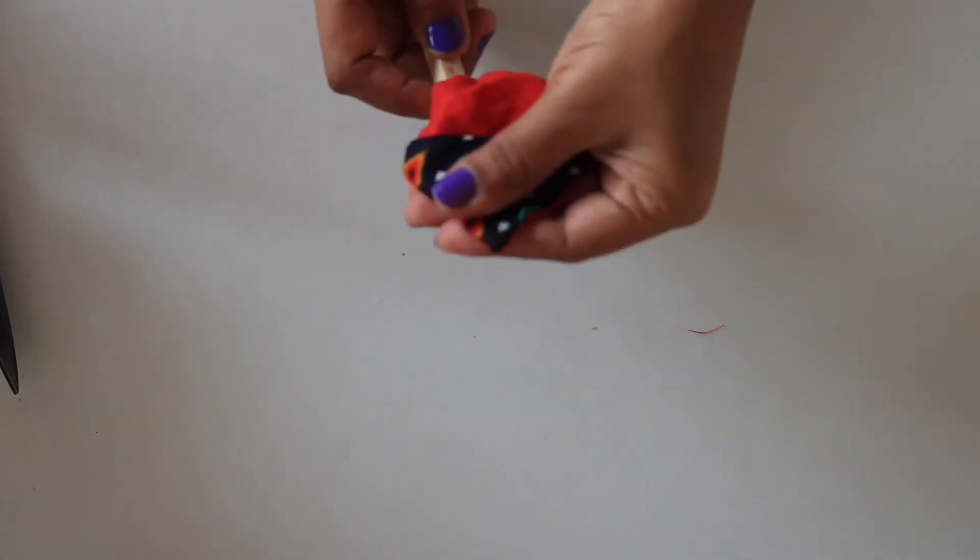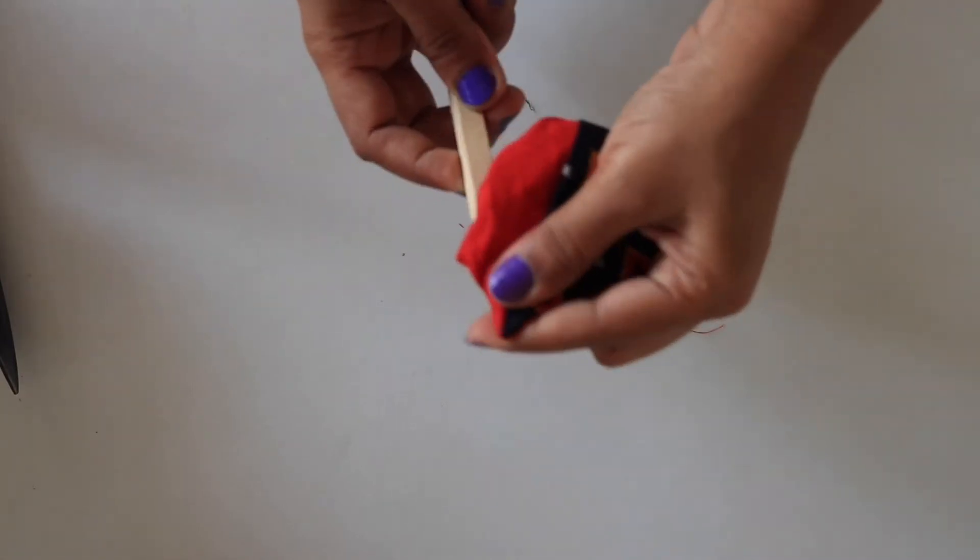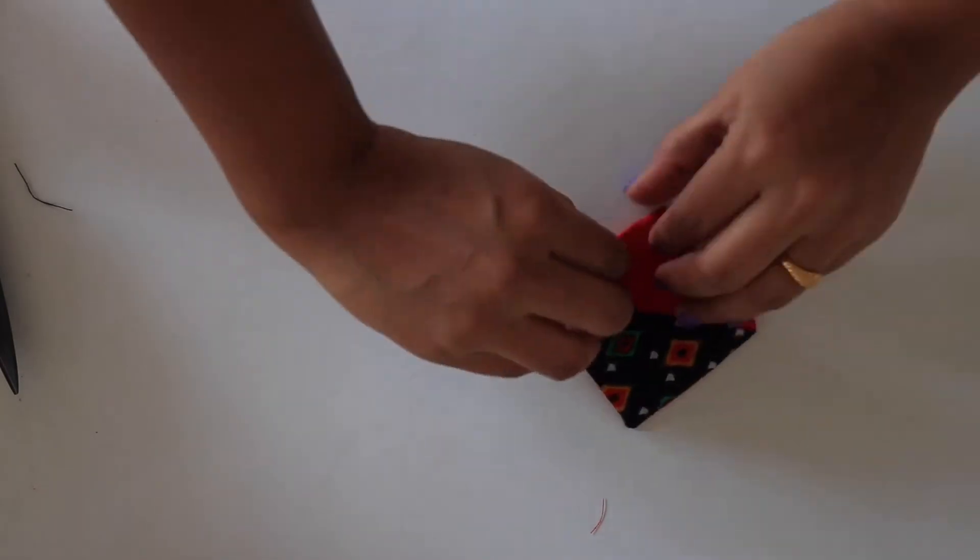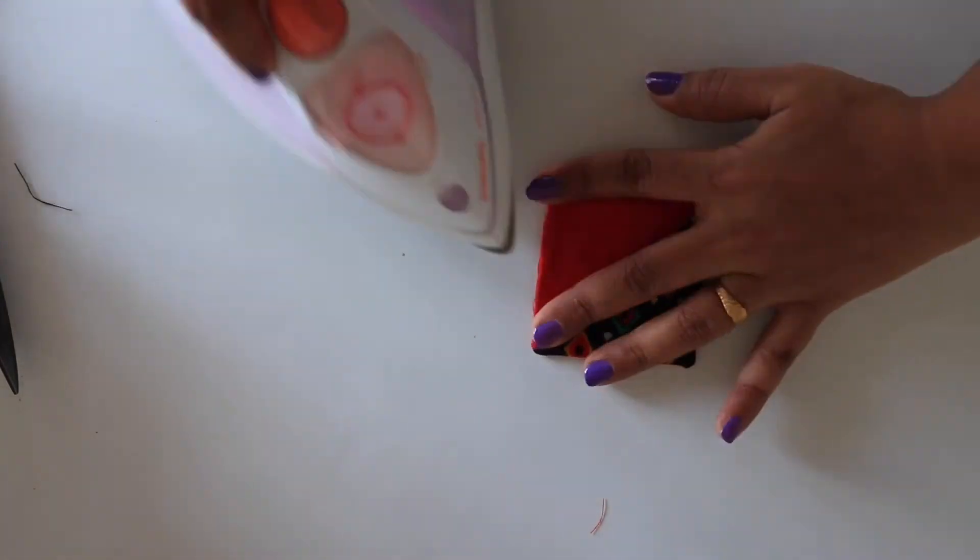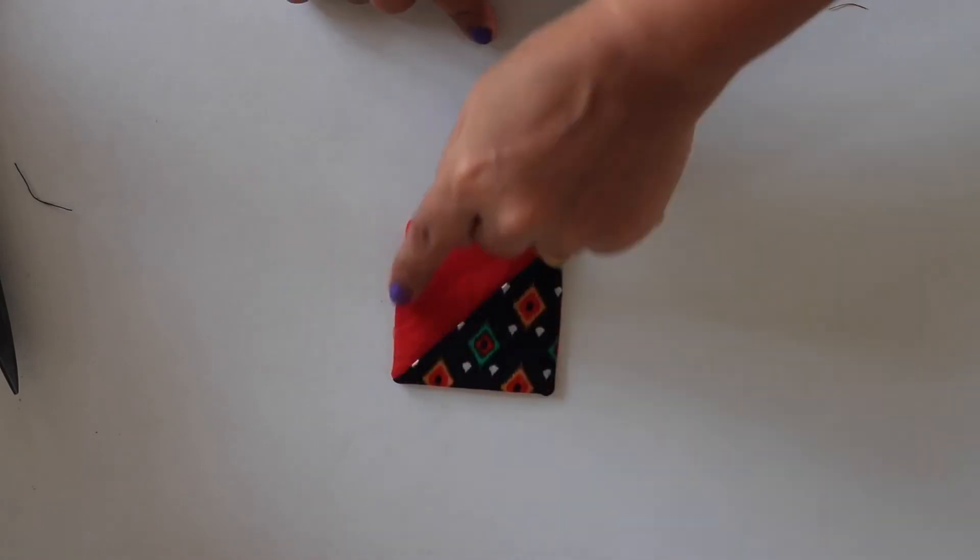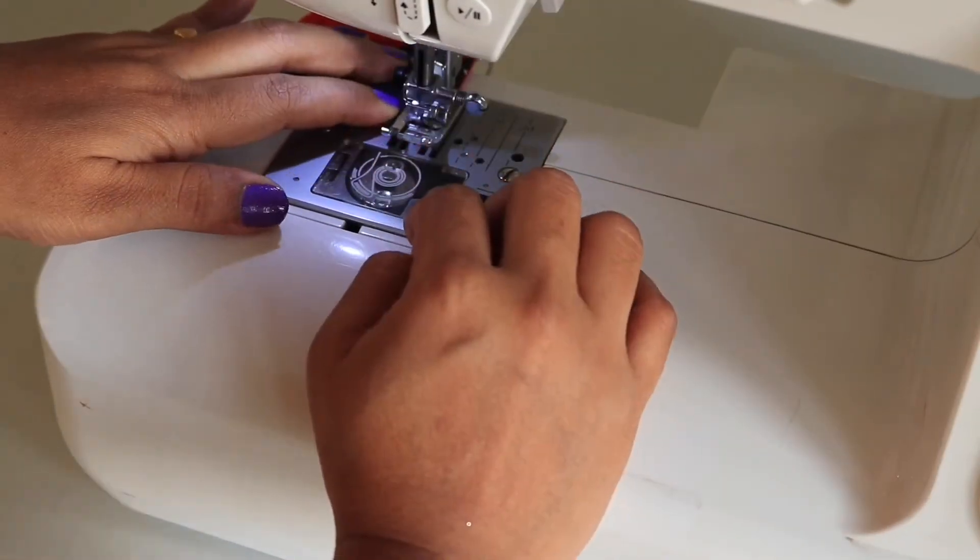With the help of chopstick or pencil, push the corners. Give it a nice press and finally topstitch around the entire edge at ⅜ inch seam allowance to close the opening.